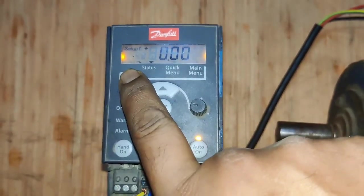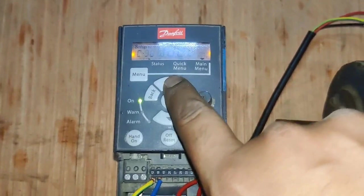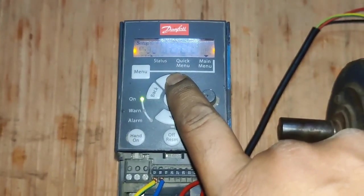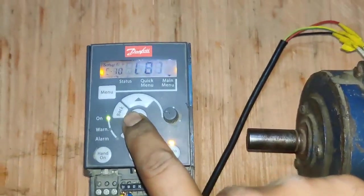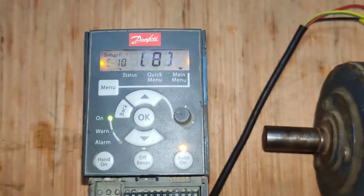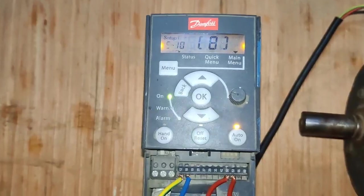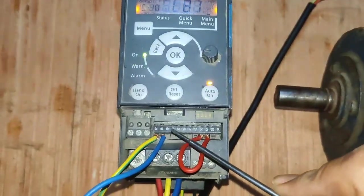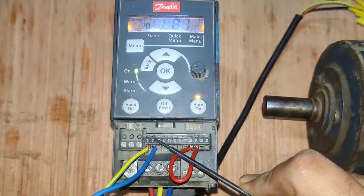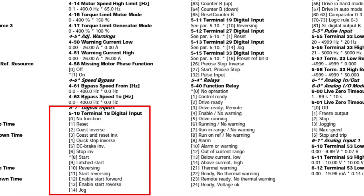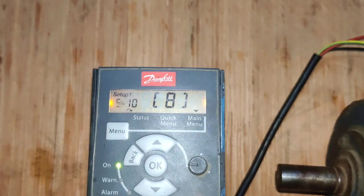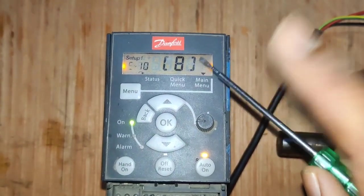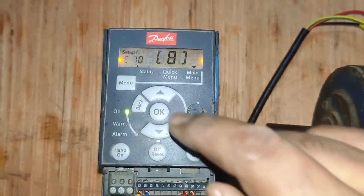Press back and enter Group 5. In Group 5, you assign functions to all digital inputs. Parameter 5-10 is for digital input 18 — we set 8, which means 'normal start'. You can also set 1 for reset, 2 for coasting inverse, 8 for normal start, 9 for latched start, 10 for reversing, or 14 for jog. Digital input 18 is assigned as normal start.